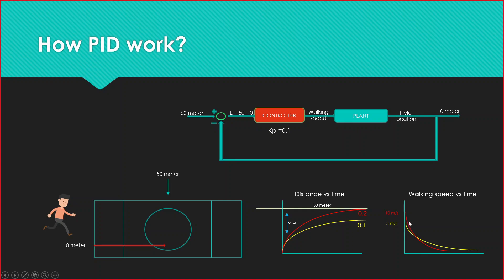Walking speed vs time, the more walking speed will increase, time will decrease. This is a very simple example where I can use P-controller to achieve my goals. Just with a simple P-controller I can reach my destination.